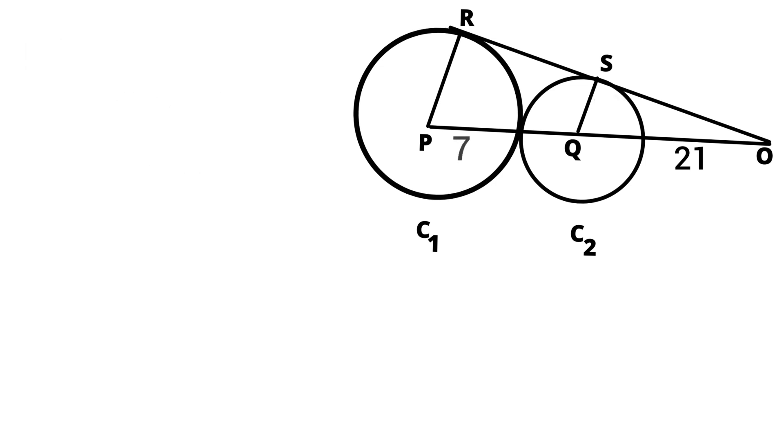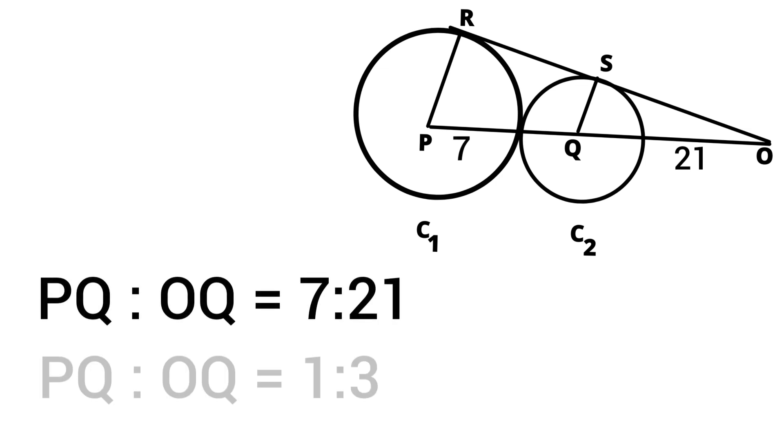Now PQ is to OQ equals 7 is to 21, which equals 1 is to 3.